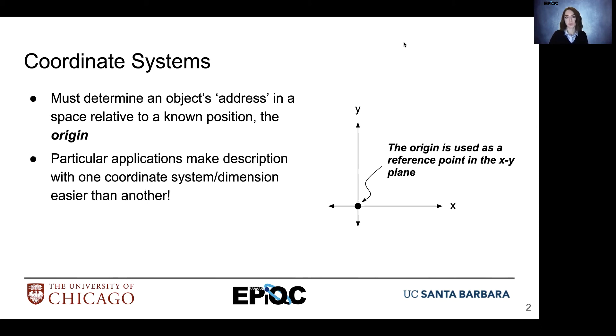So why would we want to use different coordinate systems? Sometimes particular applications make descriptions in one coordinate system easier than another. For example, what if you're working with a grid? Well, then the xy-coordinate system might work for you. But other times, if you're working with curved lines, curved surfaces, or spheres, it might make it a little bit challenging to describe things.